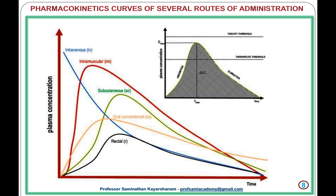The figure describes the different plasma concentrations based on several routes of administration like rectal, oral, subcutaneous, intramuscular, and intravenous. The intravenous route doesn't have an absorption phase. The oral route has a significant absorption phase when compared with another route. So the route of administration is considered to be one of the factors which influence the plasma concentration based on time.